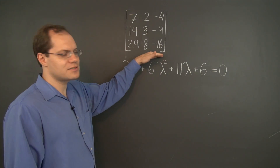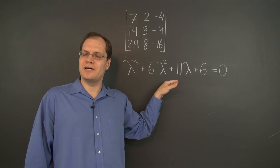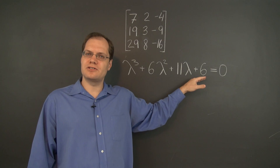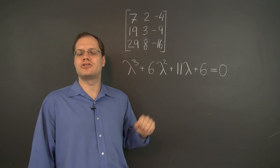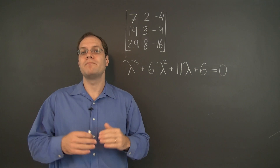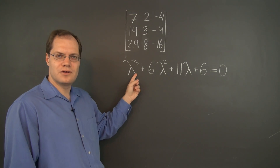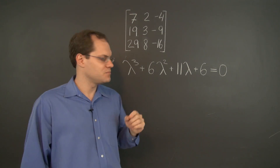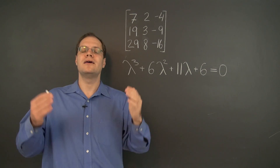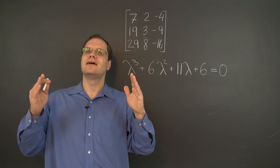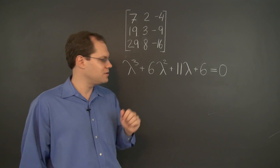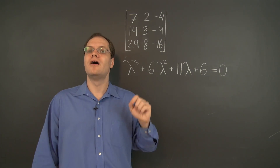Here's its statement: any matrix satisfies its characteristic equation. We have a 3x3 matrix and its characteristic polynomial. This might be minus the characteristic polynomial as we defined it — the determinant of A minus lambda I — but that definition leads to a minus sign in front of the leading term for odd-dimension matrices. Another common way is to define the characteristic polynomial as the determinant of lambda I minus A, which avoids that minus sign.